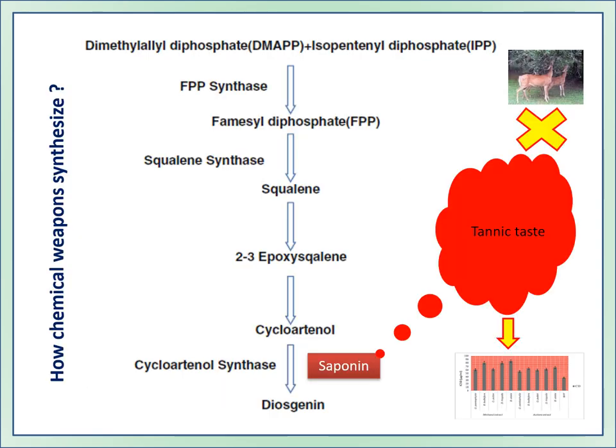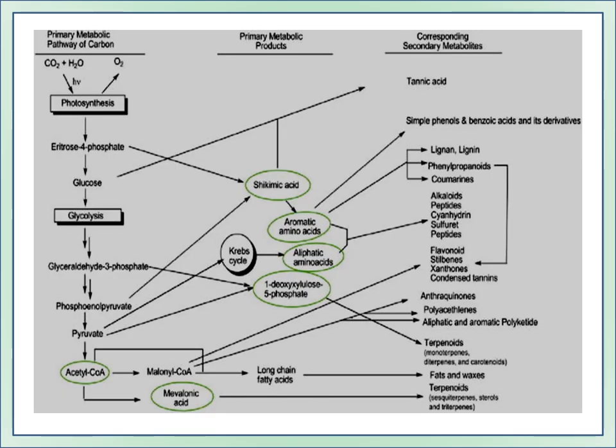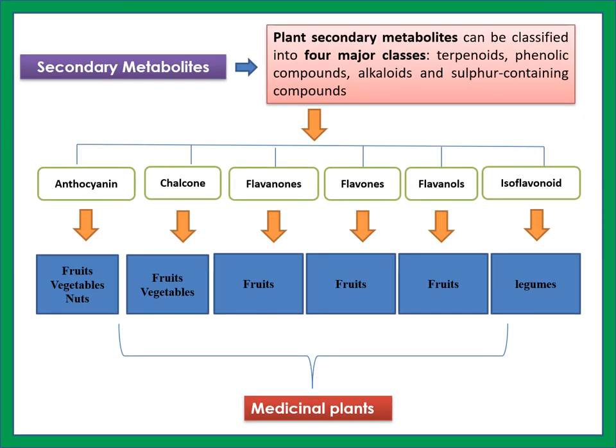Due to stress — saponins and tannins — herbivores will not consume Dioscorea species. These are the most important plant secondary metabolites, which can be classified into four major classes: terpenoids, phenolic compounds, alkaloids, and sulfur-containing compounds.